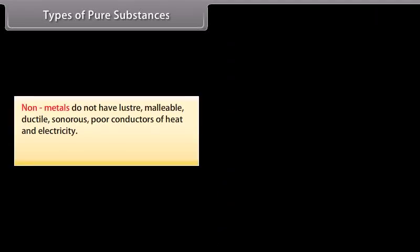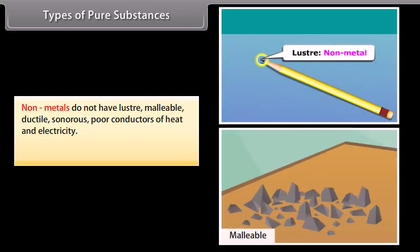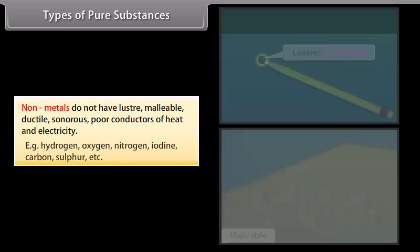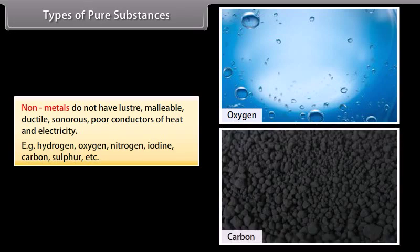Non-metals do not have lustre, malleability, ductility, sonority, and are poor conductors of heat and electricity. For example, hydrogen, oxygen, nitrogen, iodine, carbon, sulphur, etc.